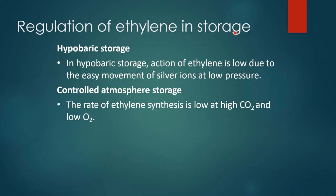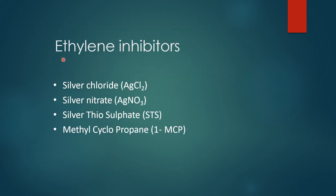Regulation of ethylene storage. In hypobaric storage, the action of ethylene is low due to easy movement of silver ions at low pressure. In controlled atmospheric storage, the rate of ethylene synthesis is low at high carbon dioxide and low oxygen concentrations. Ethylene inhibitors include silver chloride, silver nitrate, silver thiosulfate and methyl cyclopropane.